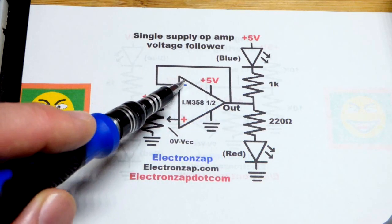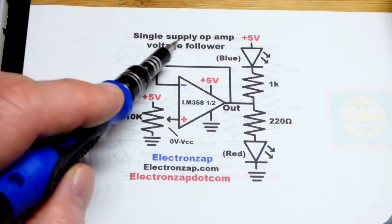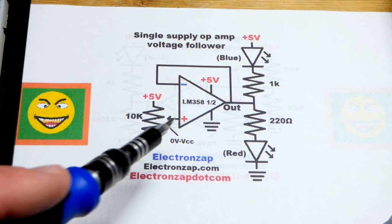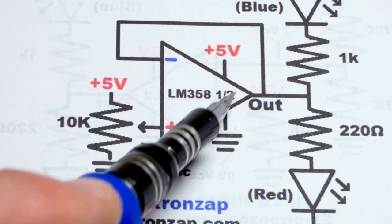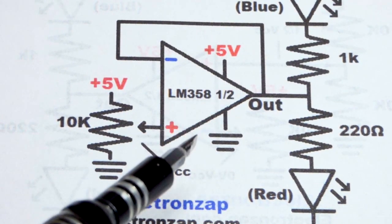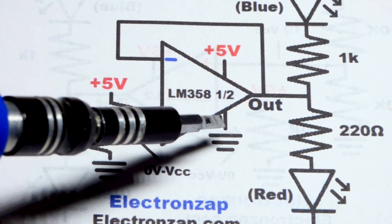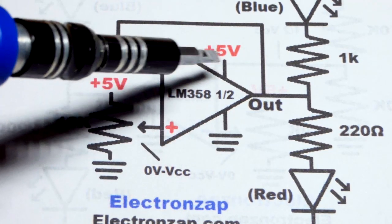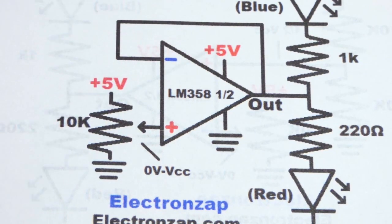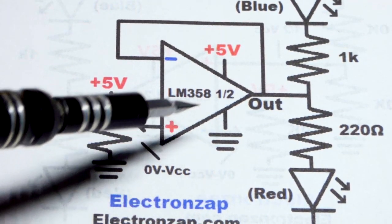This is a single supply op-amp. We are using the LM358. There's two of them on the integrated circuit - we only need one of them. You can connect the ground pin directly to ground, zero volts, when you have a five volt supply.